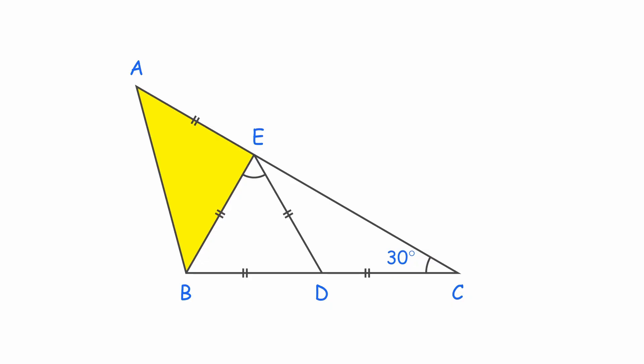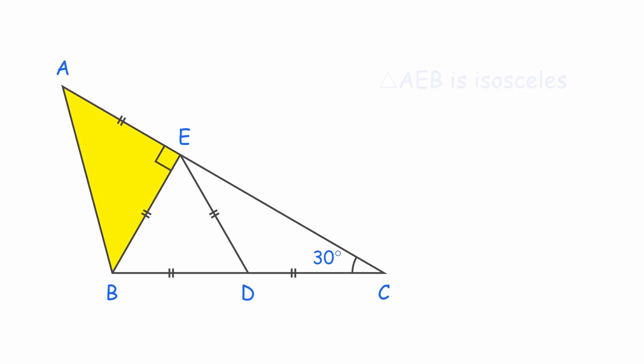Angle BED is 60 degrees from the equilateral triangle, and angle CED is 30 degrees from earlier. So angle AEB is 90 degrees. So triangle AEB is an isosceles right triangle, which means angle BAC equals 45 degrees.